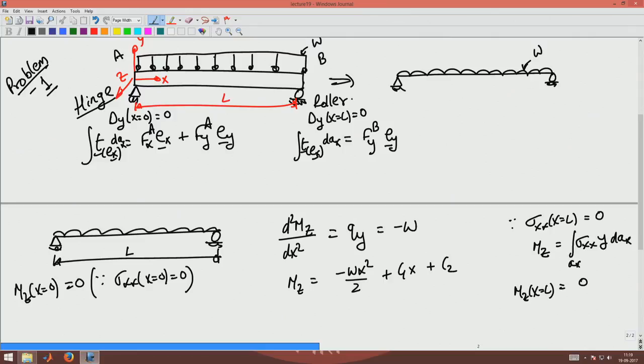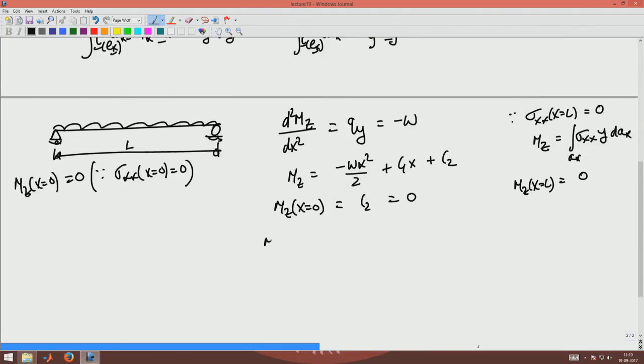So I use this condition that mz at x equal to zero is c2 and since this is zero it has to be zero. And then I use the condition that mz at x equal to L has to be c1 L minus W L square by 2. Hence, mz moment as a function of x is given by W by 2 into L x minus x square.